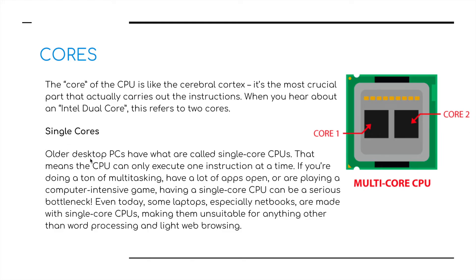Single cores: older desktop PCs have what are called a single-core CPU, meaning a CPU can only execute one instruction at a time. If you're doing a lot of multitasking, have a lot of apps open, or are playing a computer-intensive game, having a single-core CPU can cause a serious bottleneck. Even today, some laptops — especially netbooks — are made with single-core CPUs. Obviously that means they're cheaper, but it really makes them unsuitable for anything other than word processing or light web browsing.